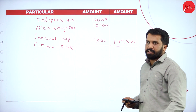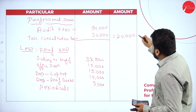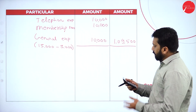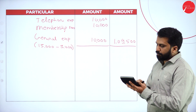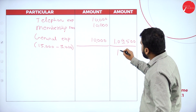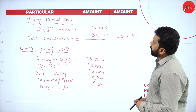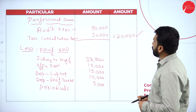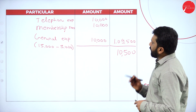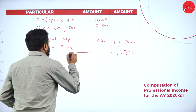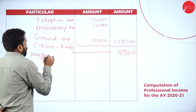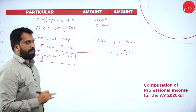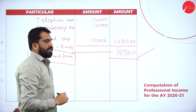Your income is 1,20,000 and your expenditure is 1,09,500. So 1,20,000 minus 1,09,500 gives income of 10,500. This 10,500 is your professional income, or income from profession. You got 10,500 as the final answer.